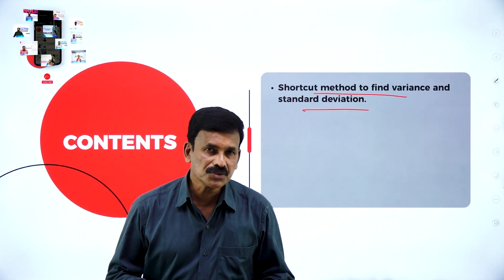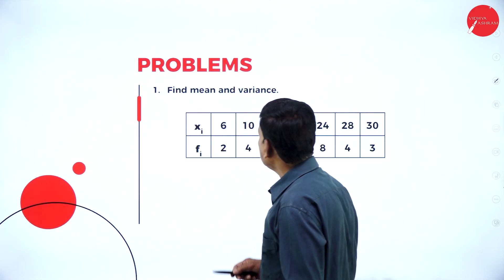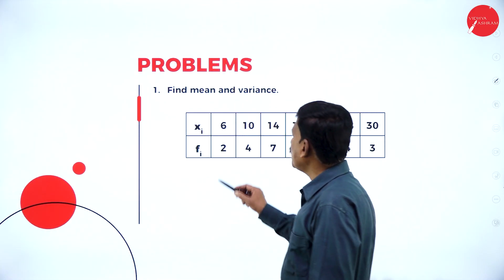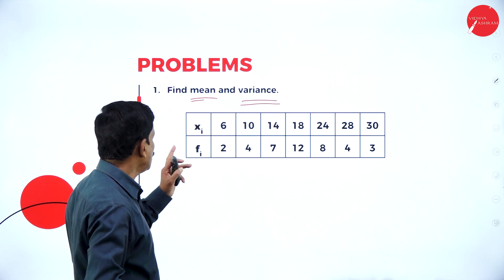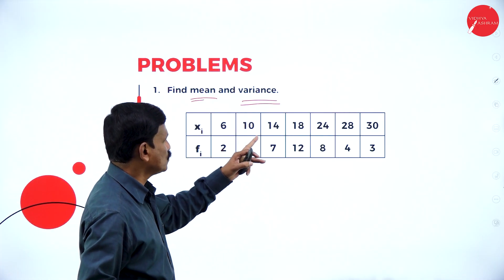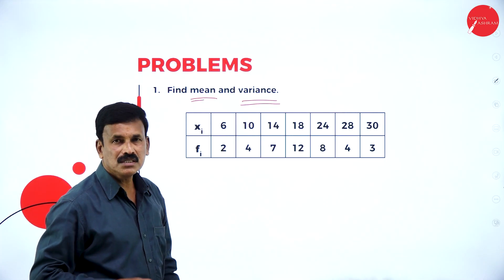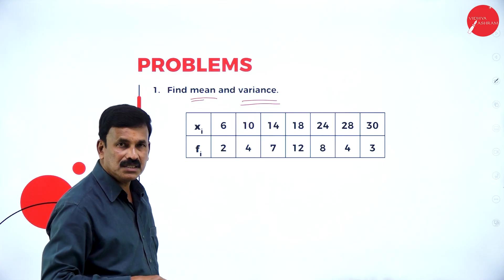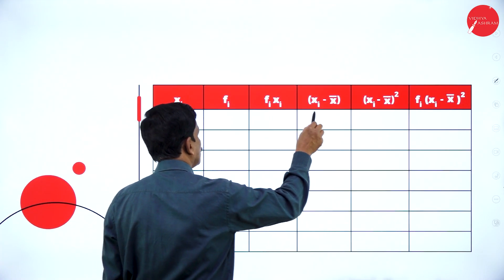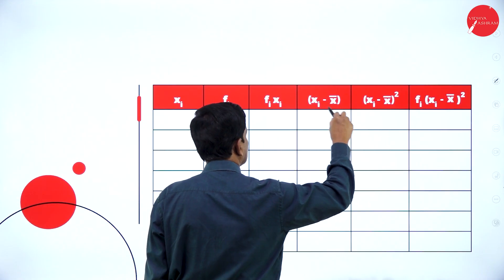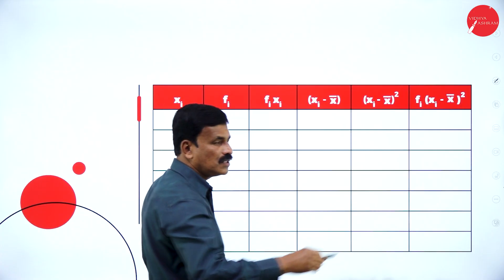Problems related to standard deviation and variance — straight away move to the first problem. Find the mean and variance for the given data. What is given: xi and fi. xi: 6, 10, 14, 18, 24, 28, 30. fi: 2, 4, 7, 12, 8, 4, and 3. Now just arrange this in the table: xi, fi, fi into xi, xi minus x-bar, then xi minus x-bar whole square, and fi into xi minus x-bar whole square.